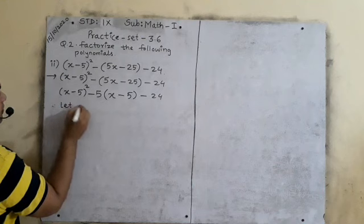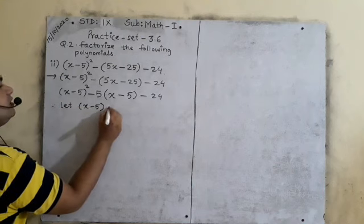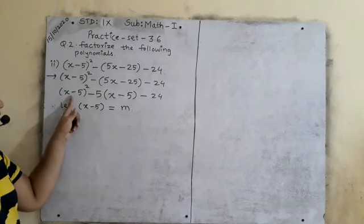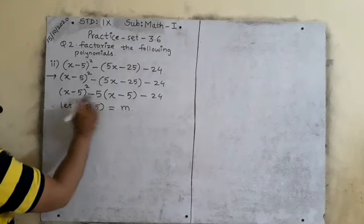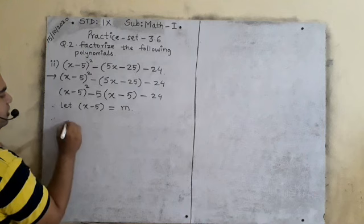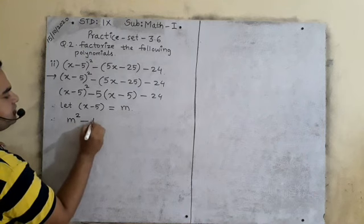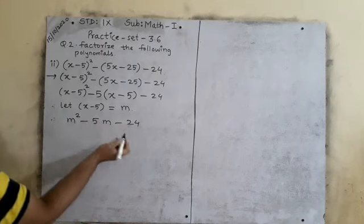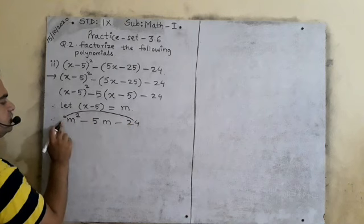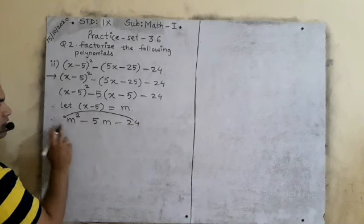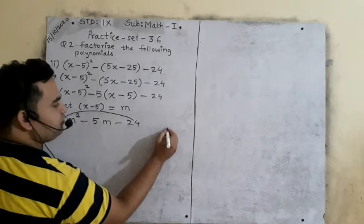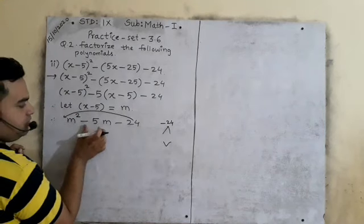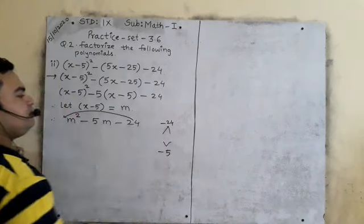Therefore we will consider: let x minus 5 equals m. So here we will keep 5m, and here also we will keep m. Therefore it will be m squared minus 5m minus 24. Now what you will do? Factorize. The constant term will multiply to the coefficient of the square term: minus 24 ones are minus 24. What is in between? Minus 5.